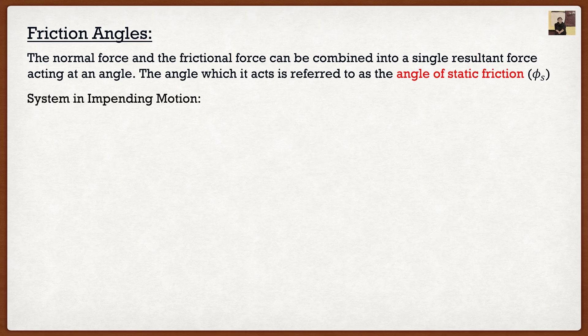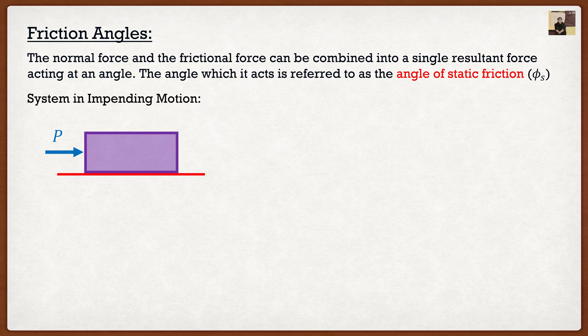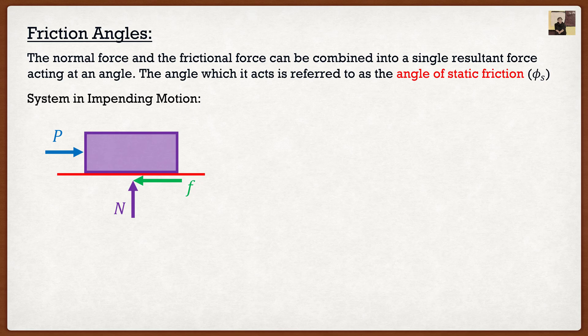So let's look at a system in impending motion. We have a force P acting on the box, so of course we have friction counteracting that and we have a normal force. Well again, if f is my x component and N is my y component of a resultant force, we know that the resultant force is going to act something like this.